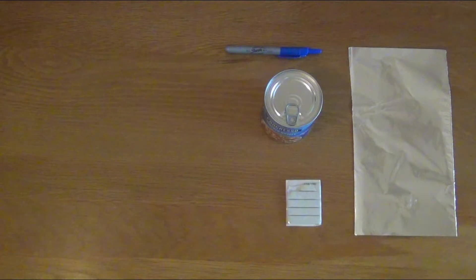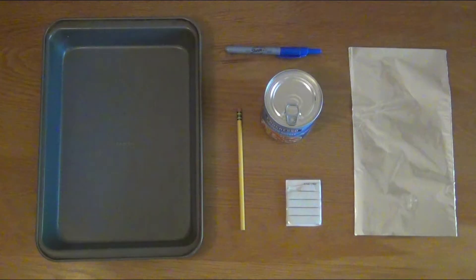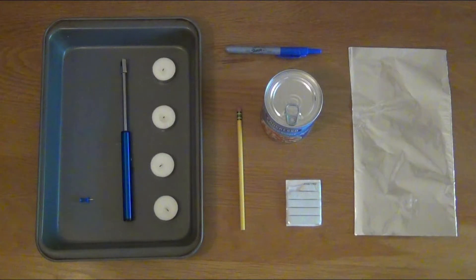To start, we're going to need some foil, a sharpie, something to trace a circle with, some sticky tack, although you could use Play-Doh or any type of putty, an unsharpened pencil with an eraser on one end, a pan or tray, four candles, a pushpin, a lighter, and a pair of scissors.